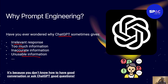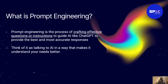So today we want to learn how to ask AI questions. What is prompt engineering? Prompt engineering is the process of crafting effective questions or instructions. It tells you the best way to guide AI to provide the best and most accurate response. How good your question is will determine how good the response you get will be. The question you ask AI is called a prompt — that's where the term comes from.